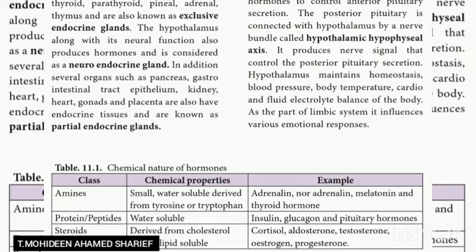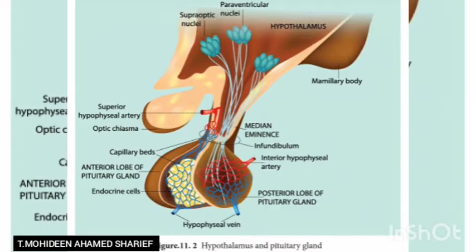Based on the chemical nature, hormones are classified into three classes. First, amines — small, water-soluble, derived from tyrosine or tryptophan; examples include adrenaline, noradrenaline, melatonin, and thyroid hormone. Second, proteins or peptides — water-soluble hormones such as insulin, glucagon, and pituitary hormones. Third, steroids — derived from cholesterol, mostly lipid-soluble; examples include aldosterone, testosterone, estrogen, and progesterone.